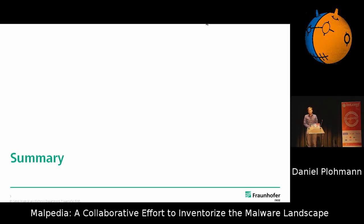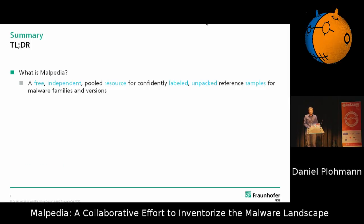So for the summary, what's Malpedia? From the intention, it's basically a free, independent public resource for confidential labelled unpacked reference samples for malware and versions. Everything in one sentence basically means I try to have a good coverage of many families, have their versions tracked as well, trying to limit it to as few samples as possible — a small corpus that's still very representative — and I'm very happy to share this kind of data.